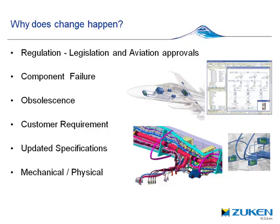Why does change happen? I've highlighted six possible reasons here why change can occur. We're all aware that the FAA and TSB in the US and the CAA in Europe are responsible for changes to aviation legislation, safety, and standards. As these bodies have enforcement powers, we as engineers must be precise in our designs and change management to fulfill any regulation changes made by these authorities.